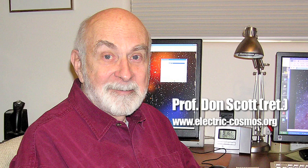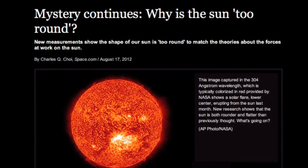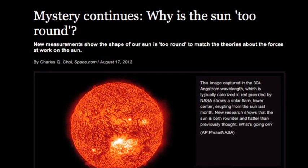The other one is how round the Sun is. It's almost a perfect sphere, and if it were as the standard model predicts it to be, it should not be that round.